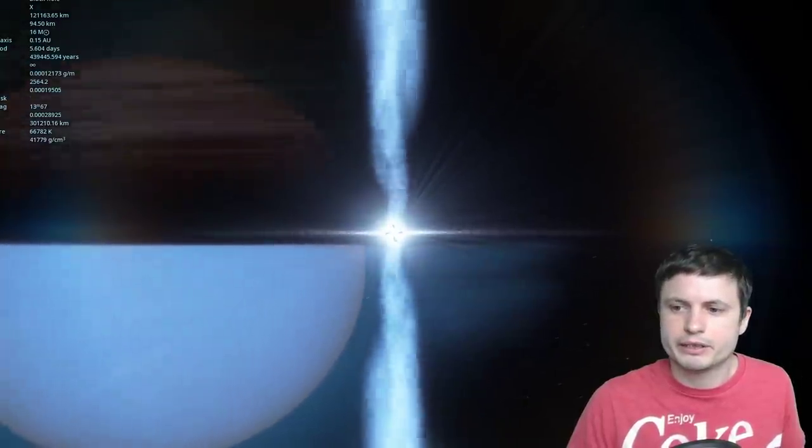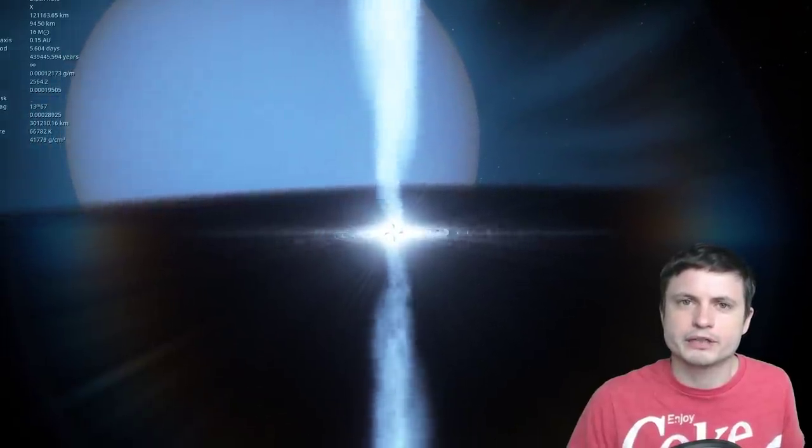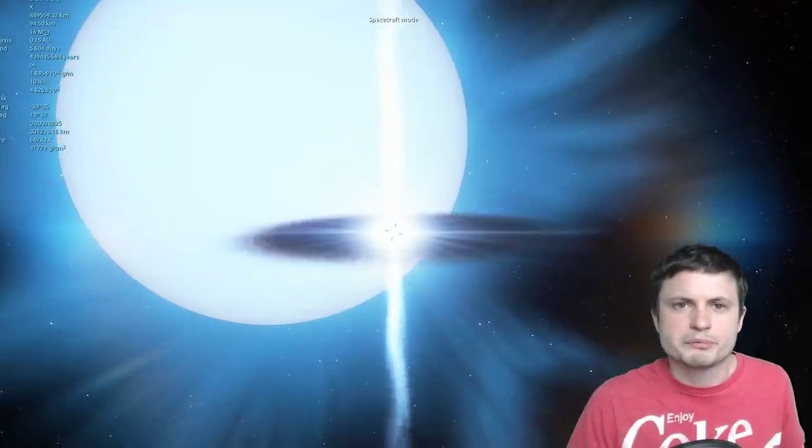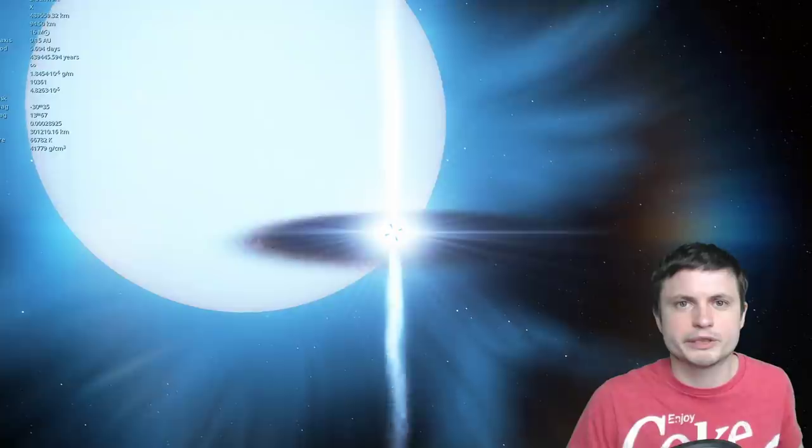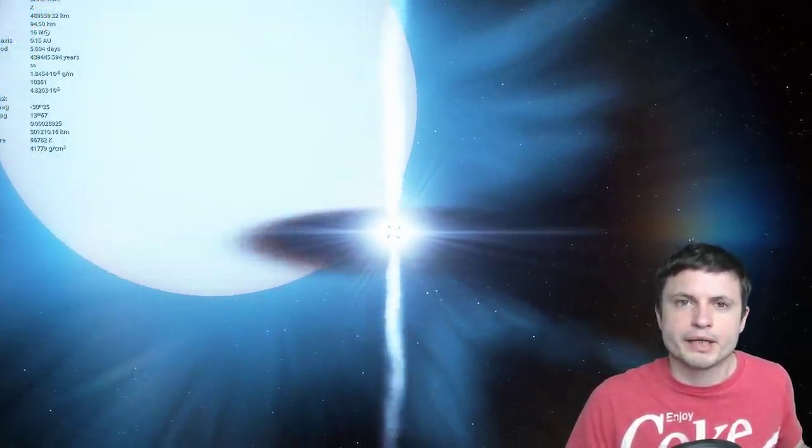This right here is the object known as Cygnus X-1, a black hole and a very large star relatively close to one another. Because there's an interaction between them and the black hole is able to consume a lot of material and produce a lot of energy, this is essentially how we're able to see it.